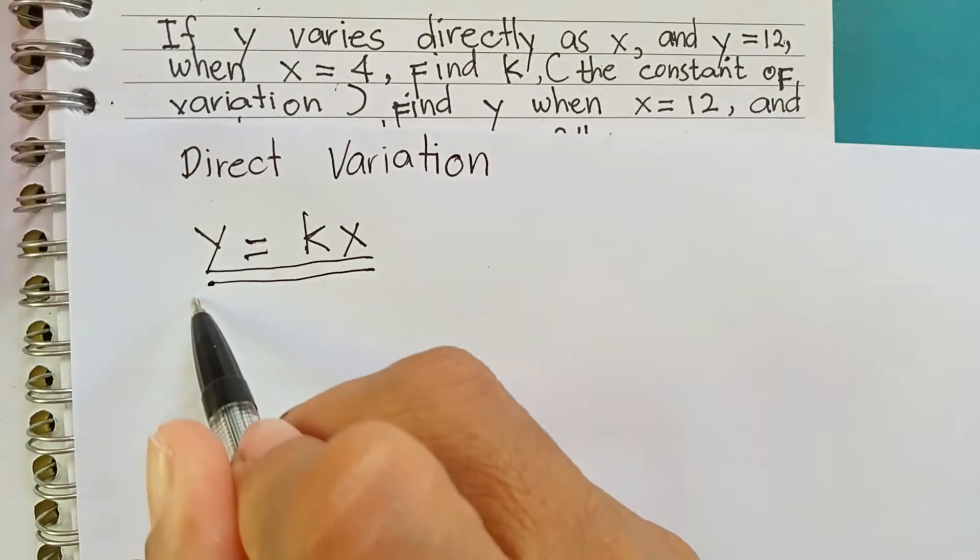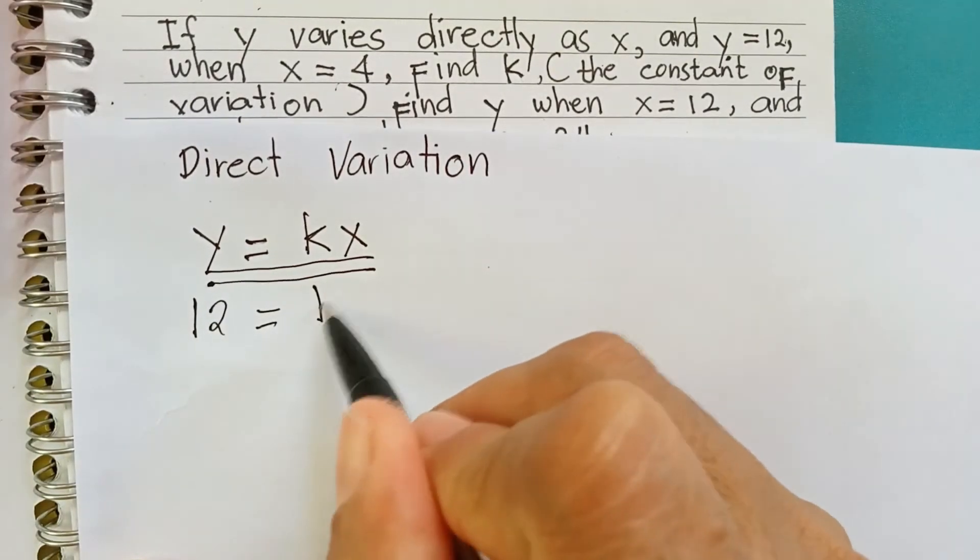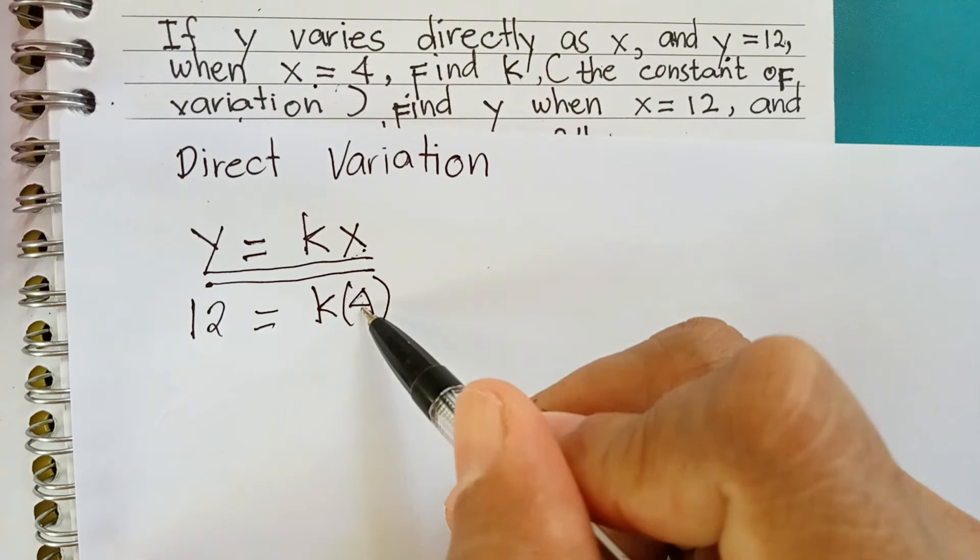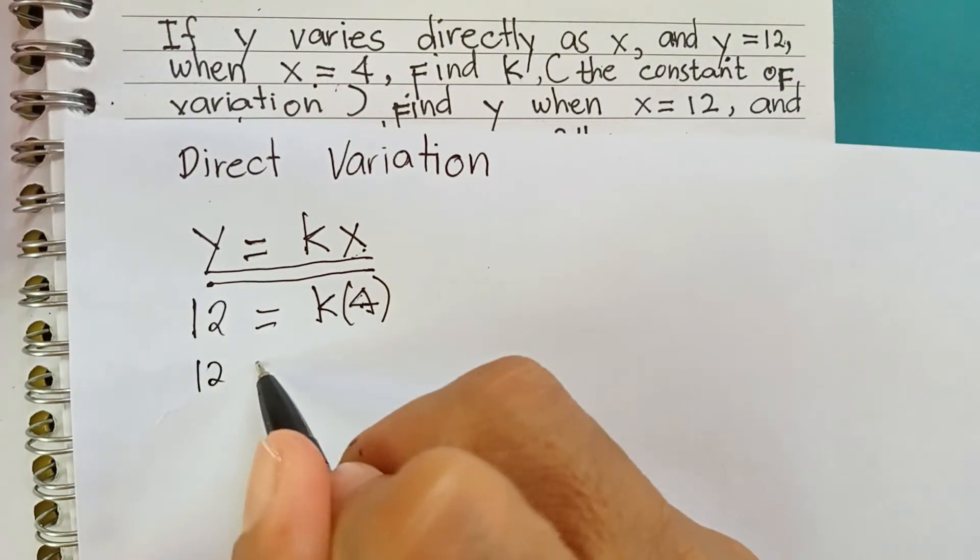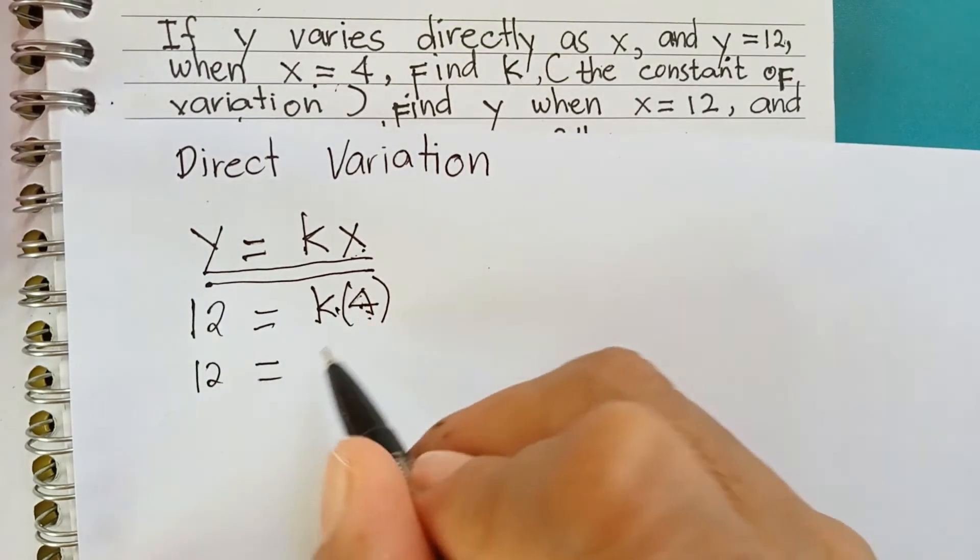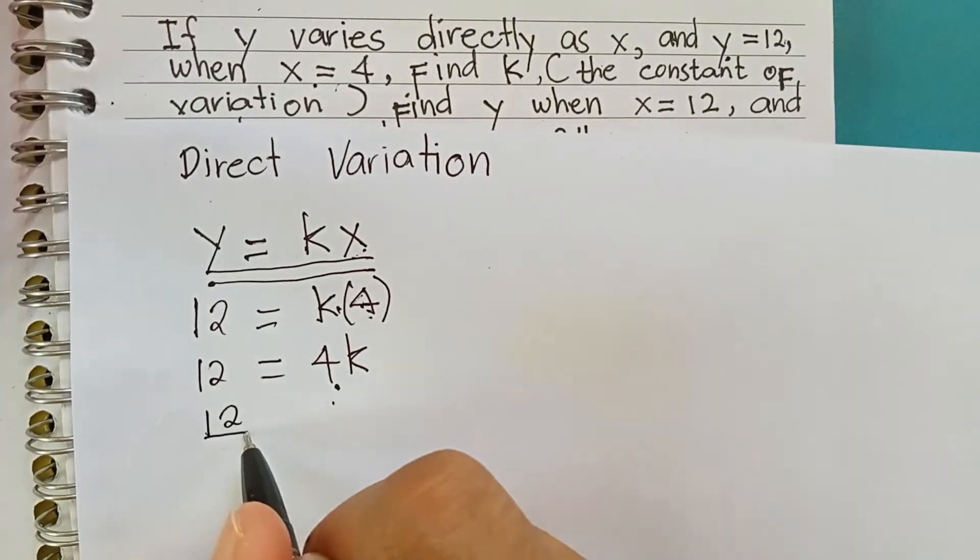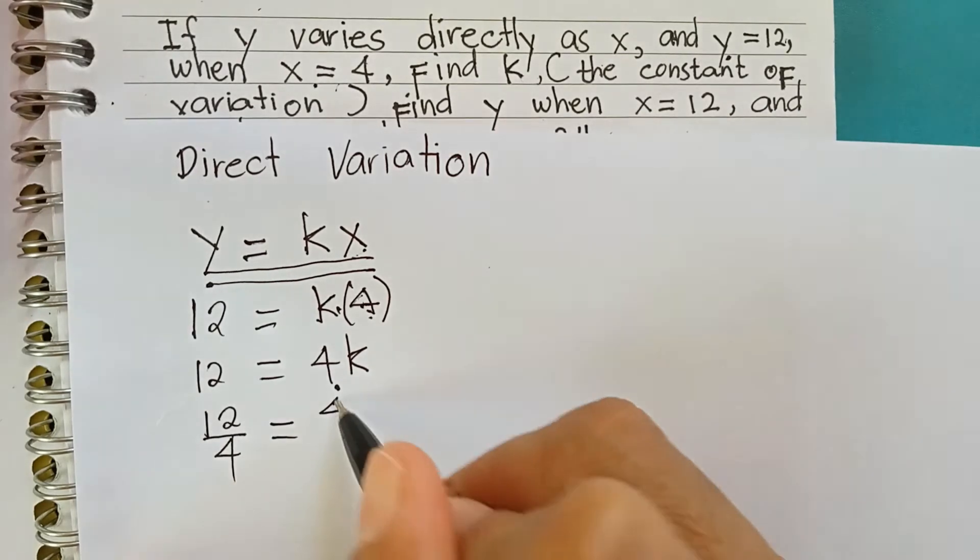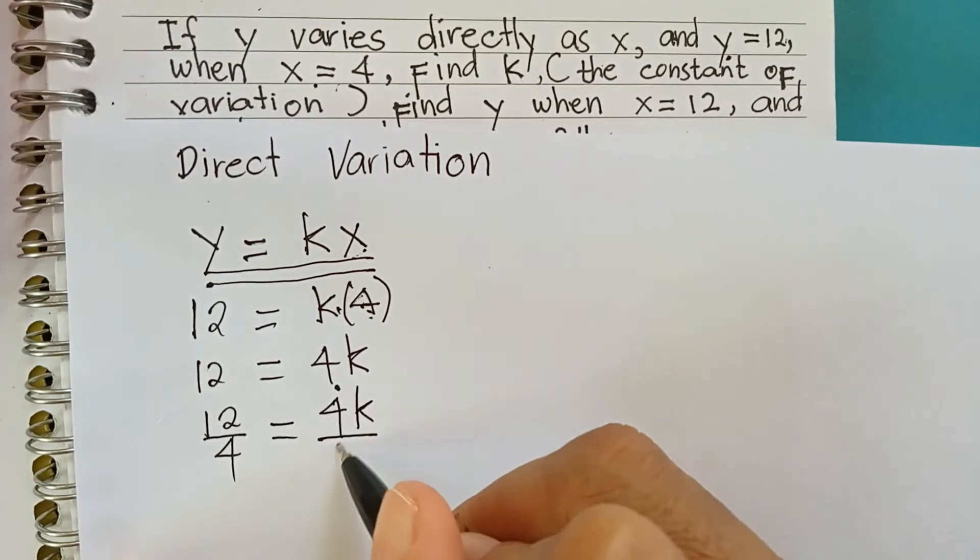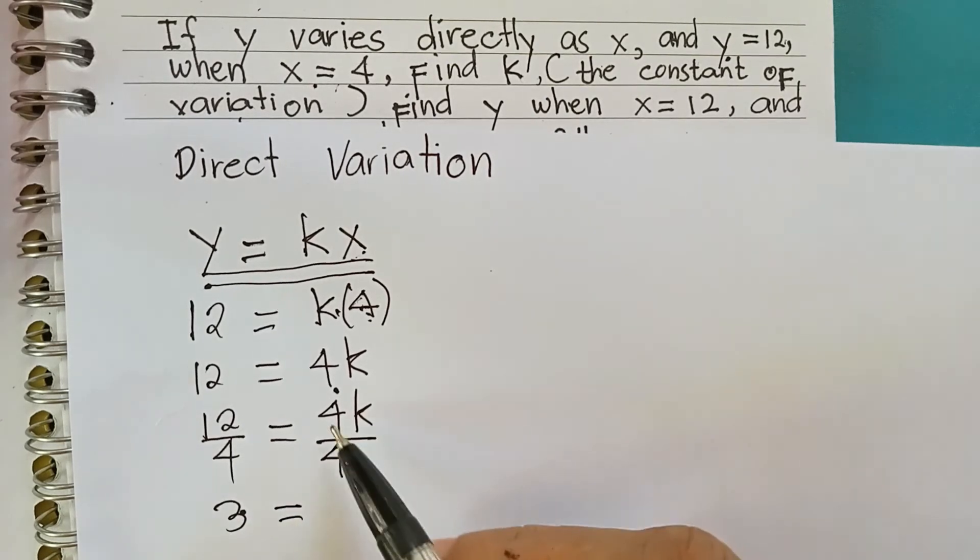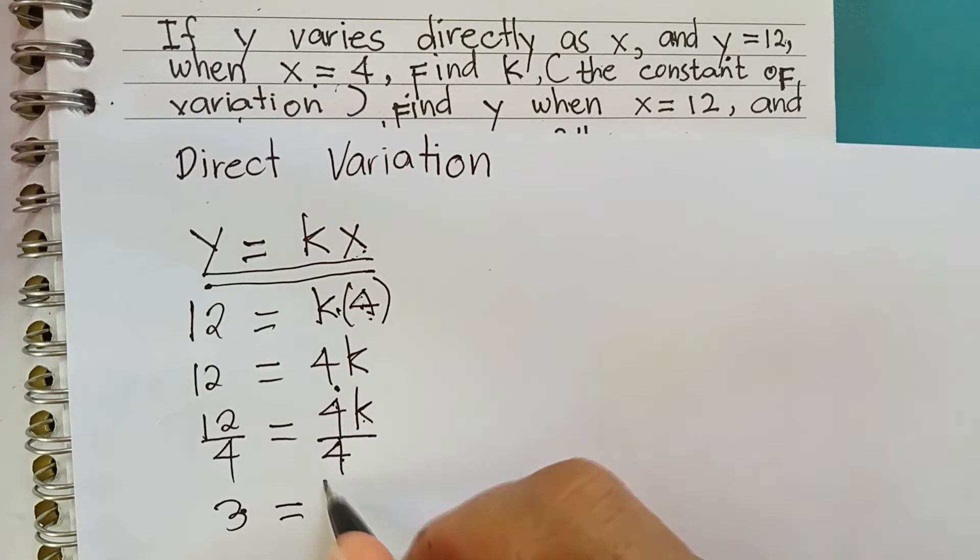So, y is 12 equals k times 4, which is the value of x. 12 is equal to 4 times k is 4k. We will divide now both sides by 4. So, makita mo na 12 divide 4 equals 4k divided by 4. 12 divided by 4 is equal to 3 equals 4 divided by 4 is 1 times k is k.